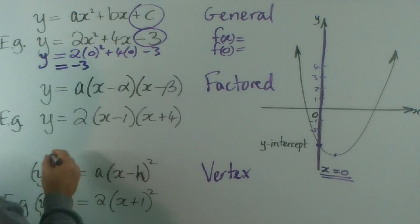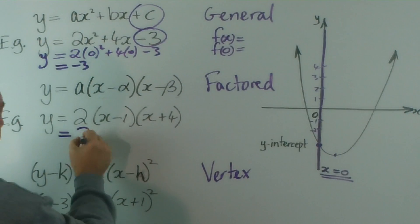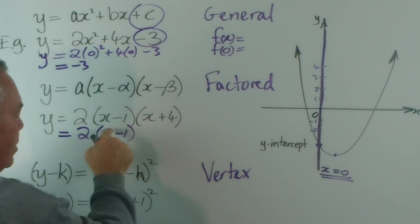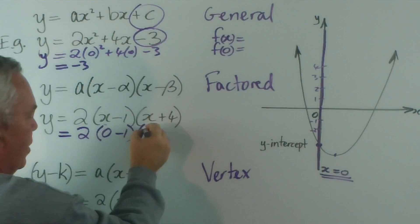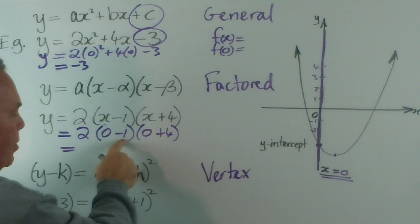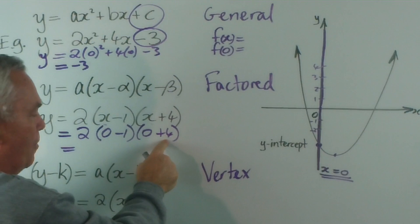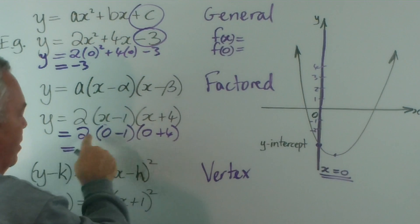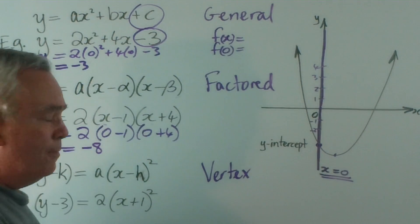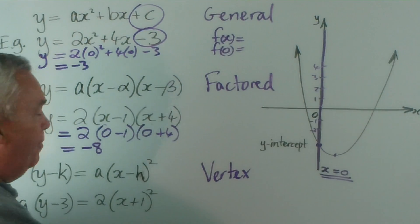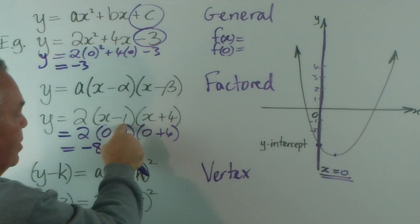In the factored form it's more difficult. If I substitute x equals zero to find the y-intercept, I would put zero in place of both x's. Zero minus one is still minus one, zero plus four is still four, so I'd have to multiply 2 × (-1) × 4. Two fours are eight, multiplying by minus one makes it negative eight. If you're doing this in your head, it's quite easy: it's this coefficient times this number times this one.